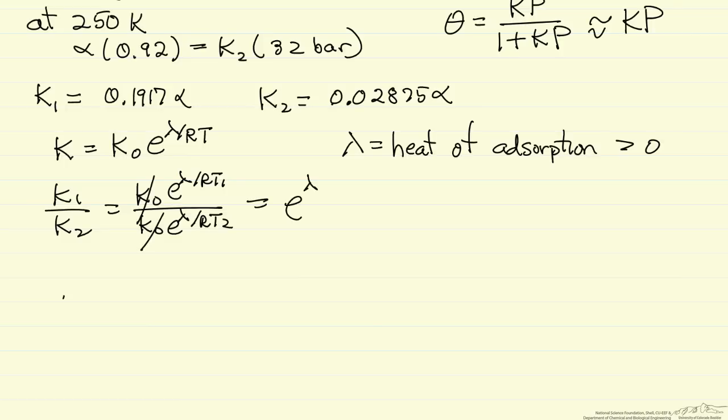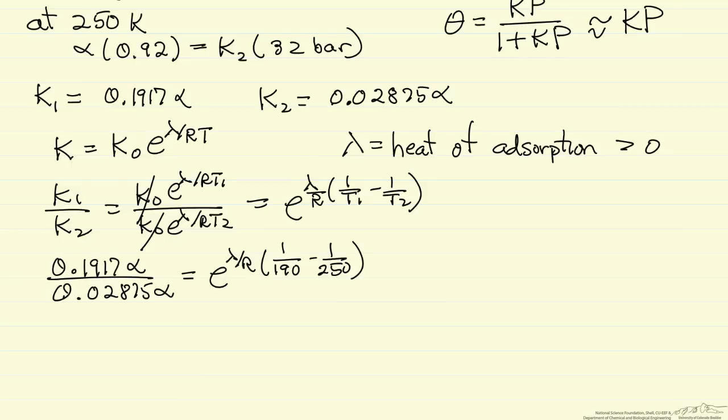This is lambda over R, 1 over T1 minus 1 over T2. So now I can substitute in values. Of course, these are absolute temperatures. I can simplify this. This is exponential. Let's write it out this way to make it a little clearer to say lambda over R, 1.263 times 10 to the minus third.